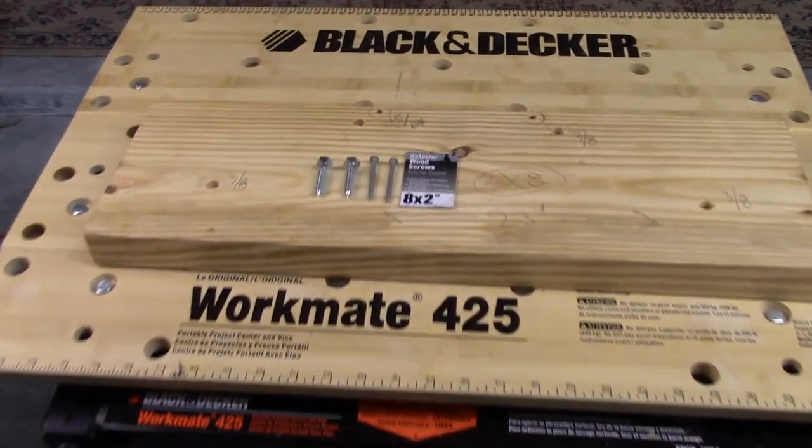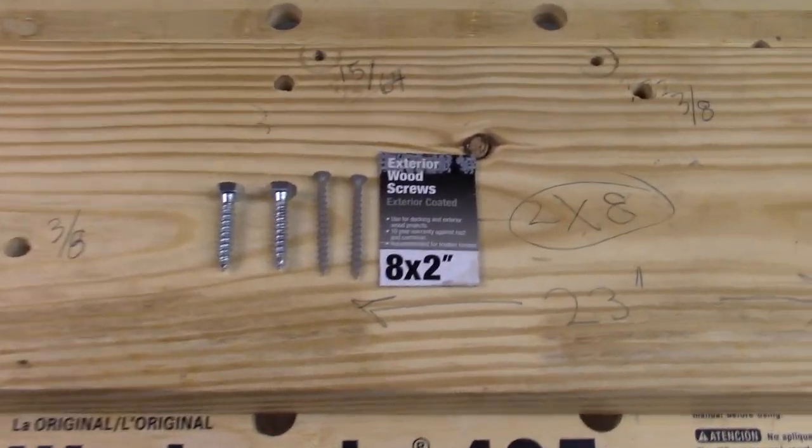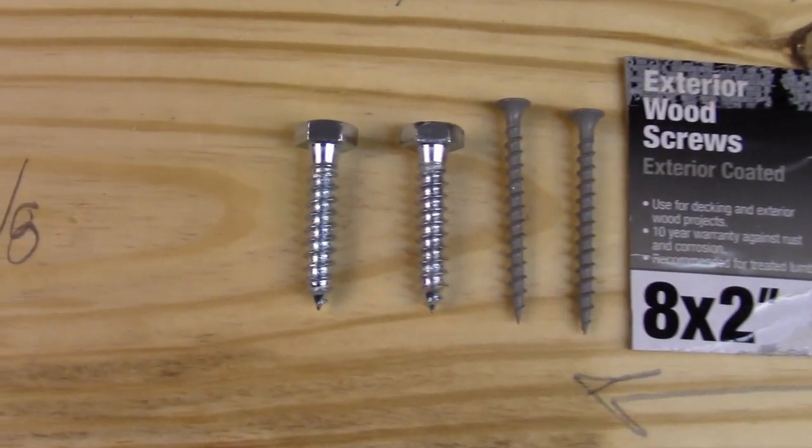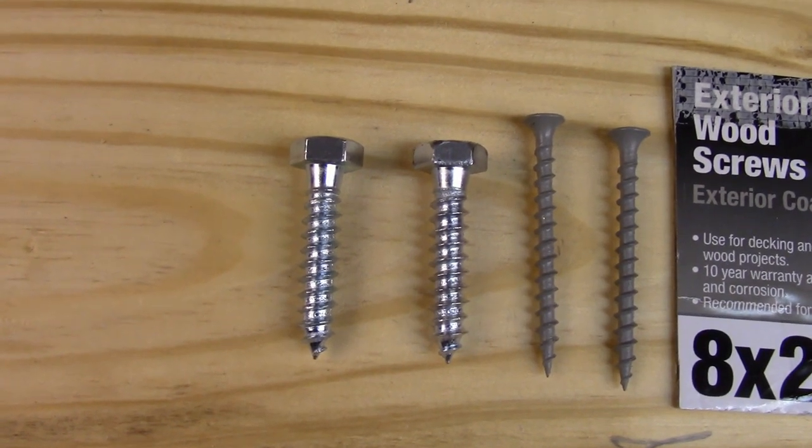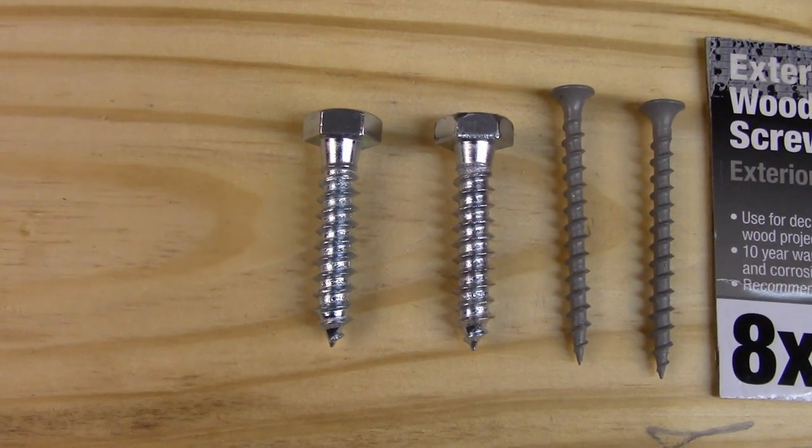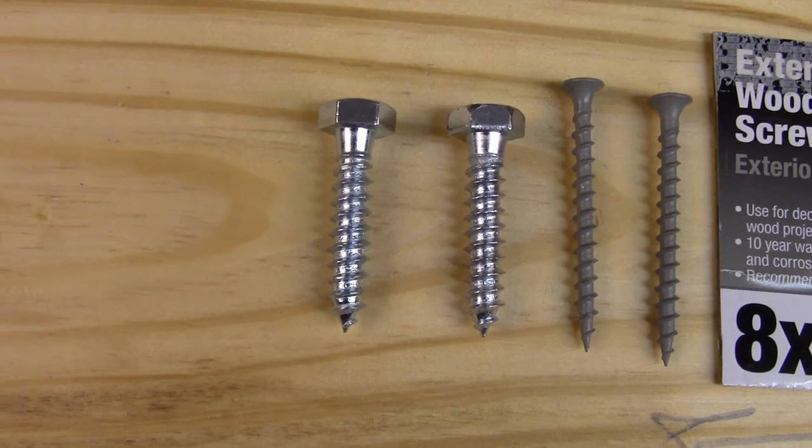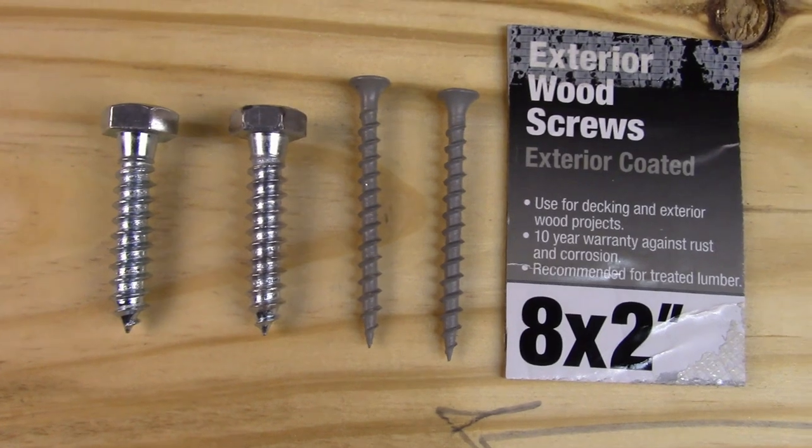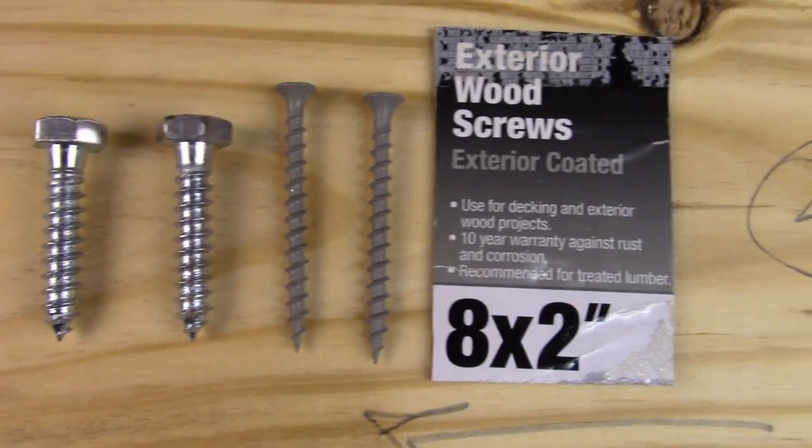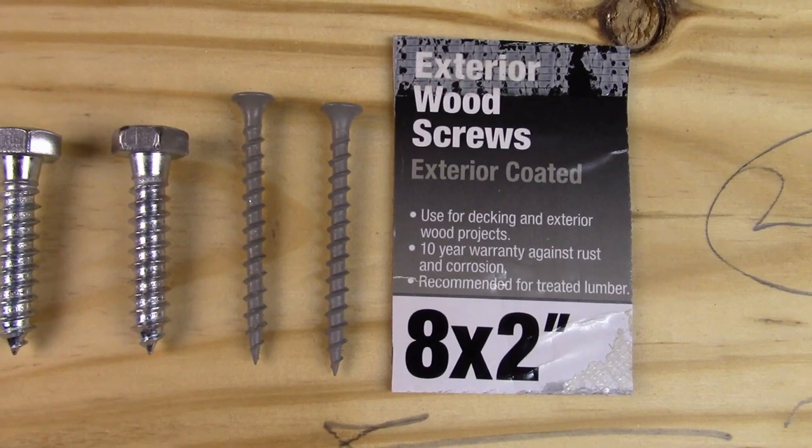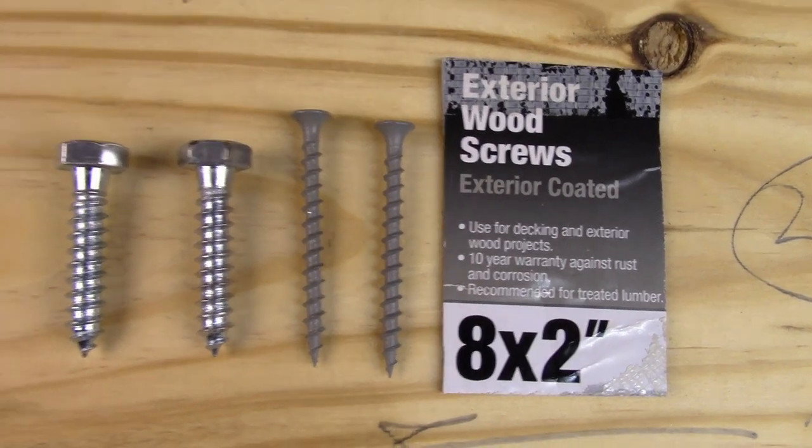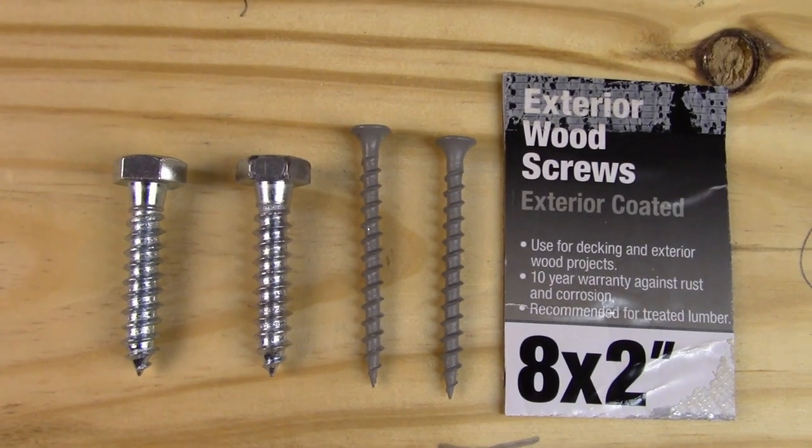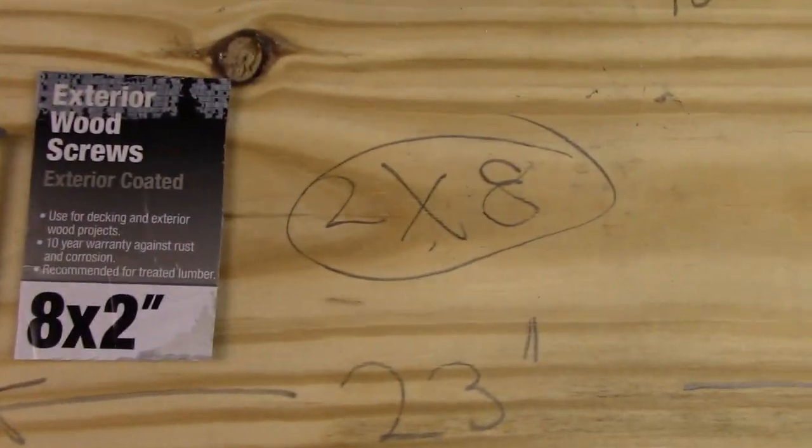First, you're going to need two hex head screws which are 5 sixteenths by 2 and a half. You'll also need two wood screws which are 8 by 2 inches. You could go with longer wood screws than I have here because these are only 2 inches. However, if you go longer with the hex head screws, they may have a tendency to come all the way through the lumber which you really don't want to have happen. And you're also going to need a piece of dimensional lumber which is 2 by 8 inches cut down to 23 inches. I put all the parts list in the description below for this project.